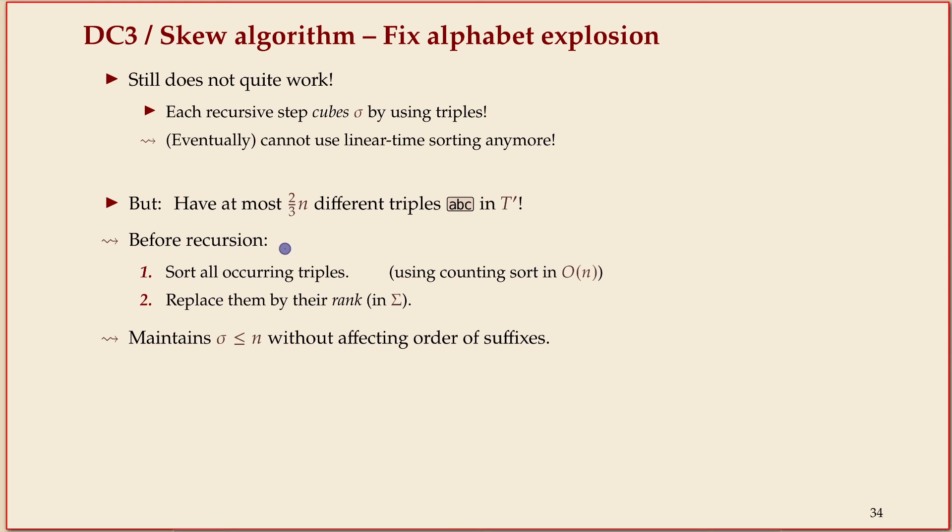So instead of using these nice boxes that I've drawn for you, we replace those by numbers. This is called an alphabet reduction or rank reduction. What we do is we sort all the triples that actually occur in our string and replace them by their rank, so we compress the alphabet down to all the characters that really occur in the string, as opposed to having space for all possible triples.